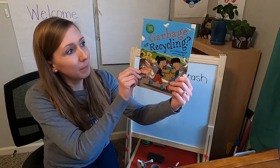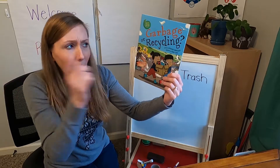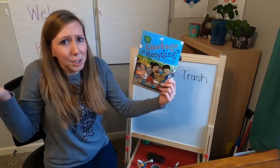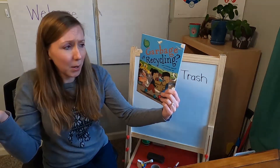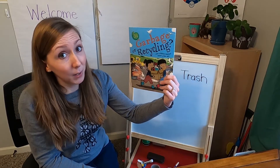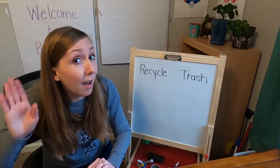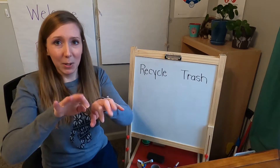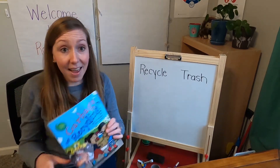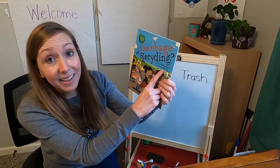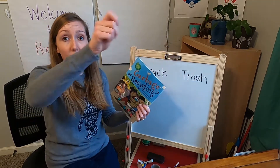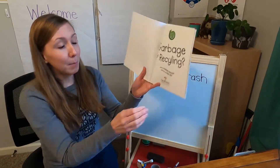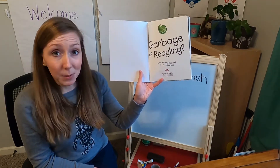This book is called Garbage or Recycling? There's a question mark at the end — whenever you see a question mark, you're asking a question. This book is written by Deborah Chancellor. Remember, the person that writes a book is called the author — the author writes the words. The illustrator of this book is Diane Ewan, and the illustrator is the person who draws the pictures. This book was published by Crabtree Publishing Company, and they gave me permission to read this book to you.